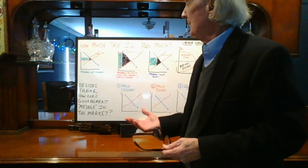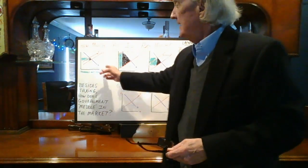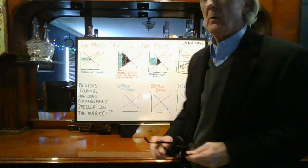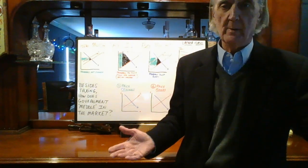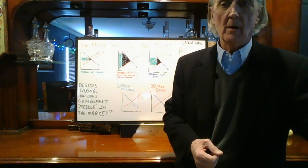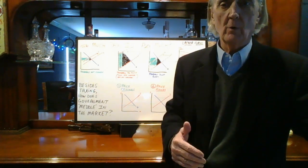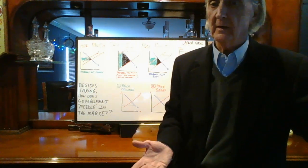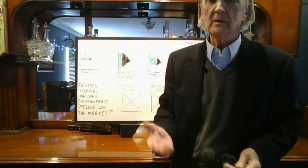Then we go to the question: how much is too much, or how much is not enough? Here you see these black wedges — that represents dead weight loss. Nobody gets that. That's the situation we encounter when we look at some of these price controls the government imposes. It creates dead weight loss. Here, a small tax isn't really enough to generate much income.